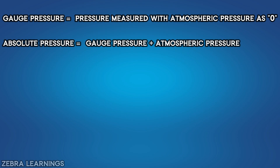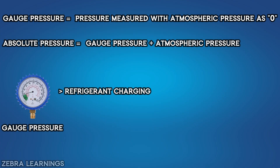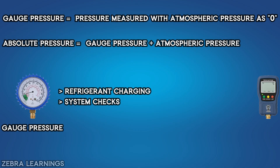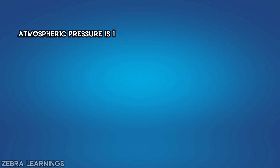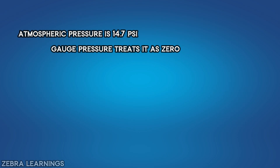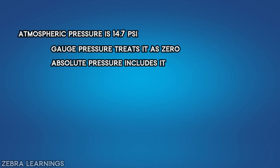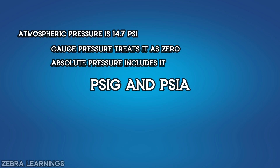In HVAC, we always use gauge pressure for refrigerant charging and system checks, and absolute pressure when measuring deep vacuum using a micron gauge. So remember: atmospheric pressure is 14.7 PSI. Gauge pressure treats it as 0, while absolute pressure includes it. That's the key difference between PSIG and PSIA.